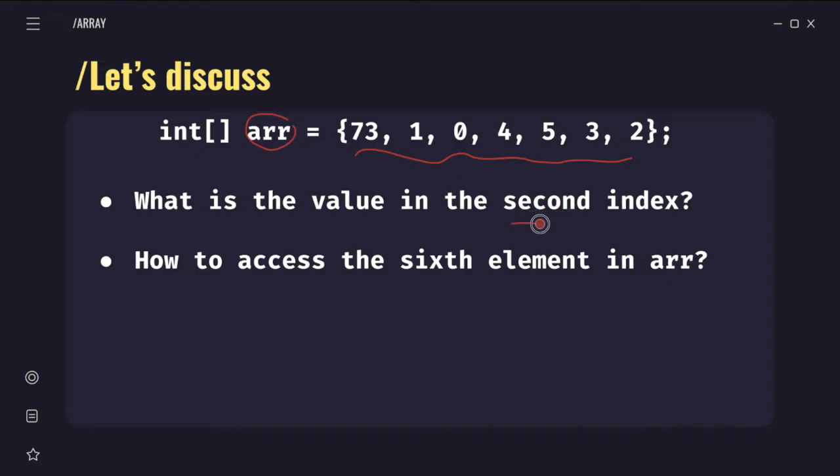When the question says second index, it means they want the index that is number 2. So we know index counting starts from zero. So 0, 1, 2, 3, 4, 5, 6. They want the value of the second index. So what is the answer? The answer is zero.